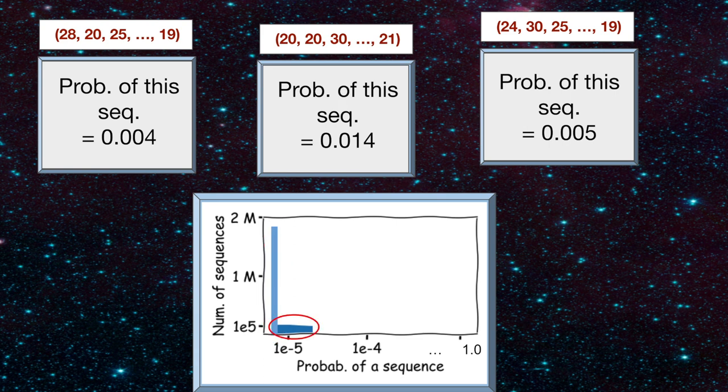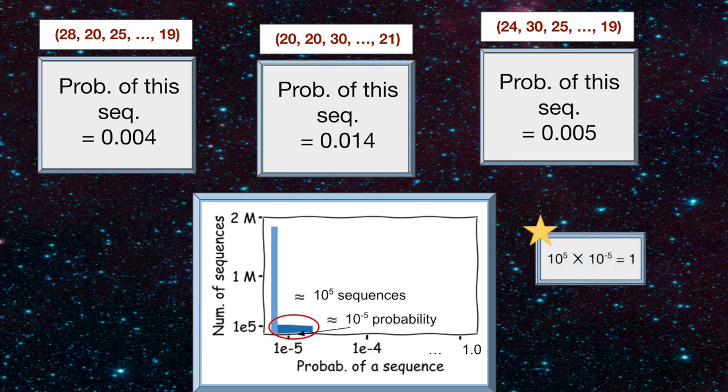A small set of sequences that are equiprobable or equally likely. In this example, there are around 10 to the 5 sequences in this subset. A really tiny fraction compared to all sequences.